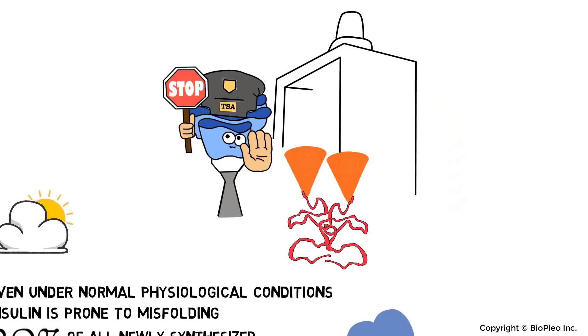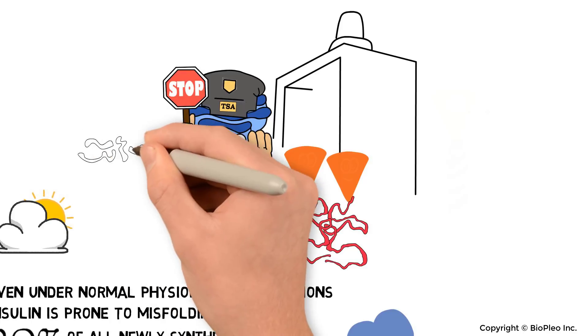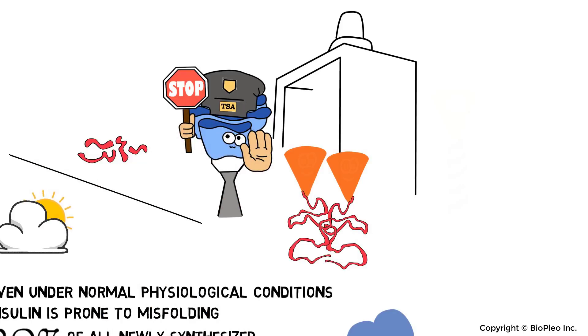In contrast, the ER can detect and send misfolded insulin to be degraded through a biological process called endoplasmic reticulum-associated degradation, or ERAD.